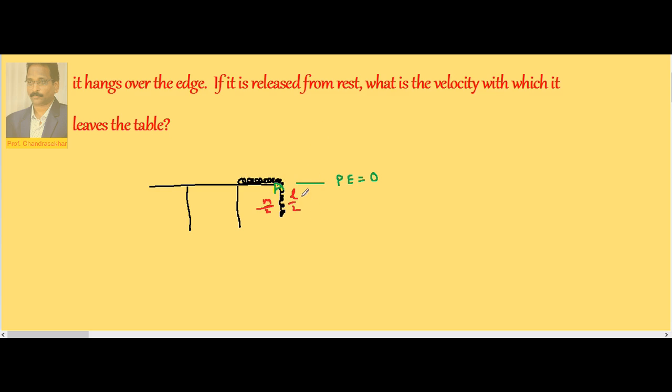Now in the first case, what is the total energy? TE₁ equals PE only, because kinetic energy term is zero. Chain is at rest, therefore it is m by 2, g into distance of center of mass.